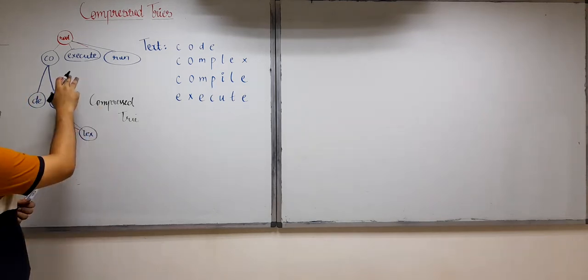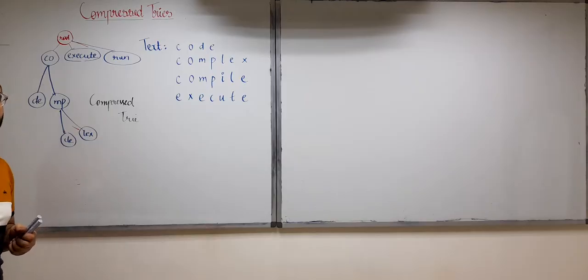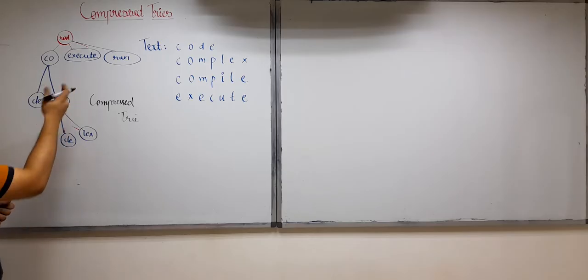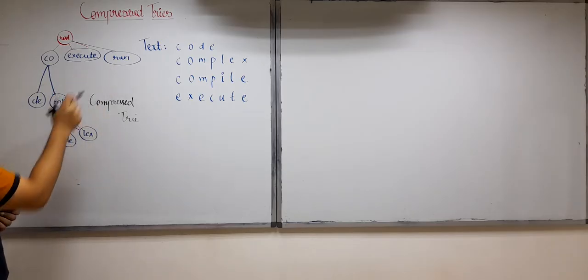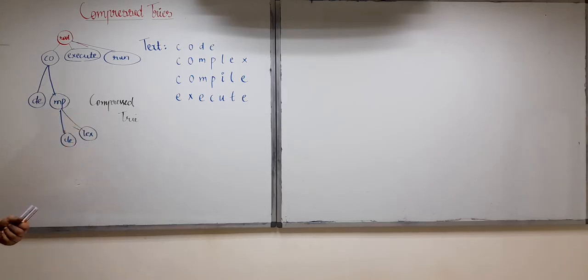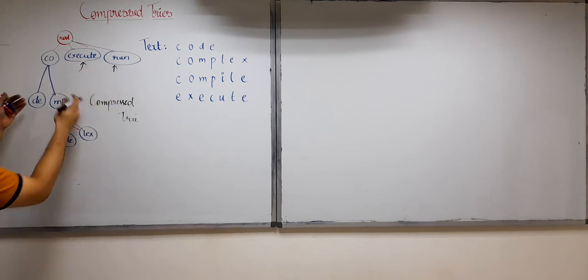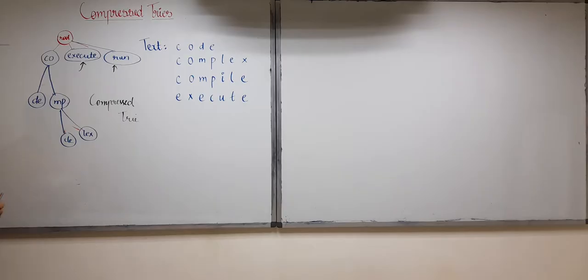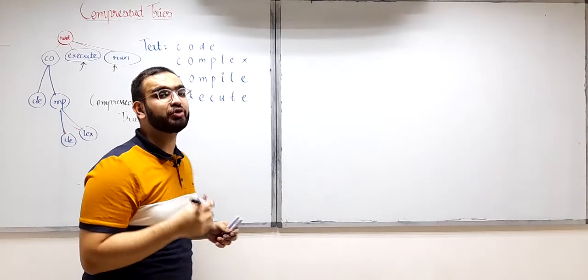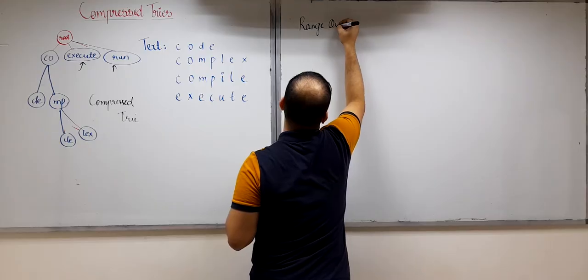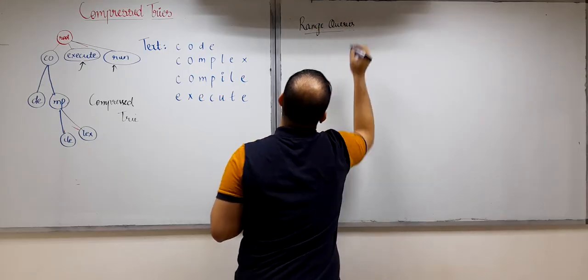You might think: after collapsing, some nodes now have labels with multiple characters — like 'execute' or 'run' — whereas earlier each node had just one character. Won't this increase the space complexity? To avoid increasing space complexity we use range queries, which I will now explain.